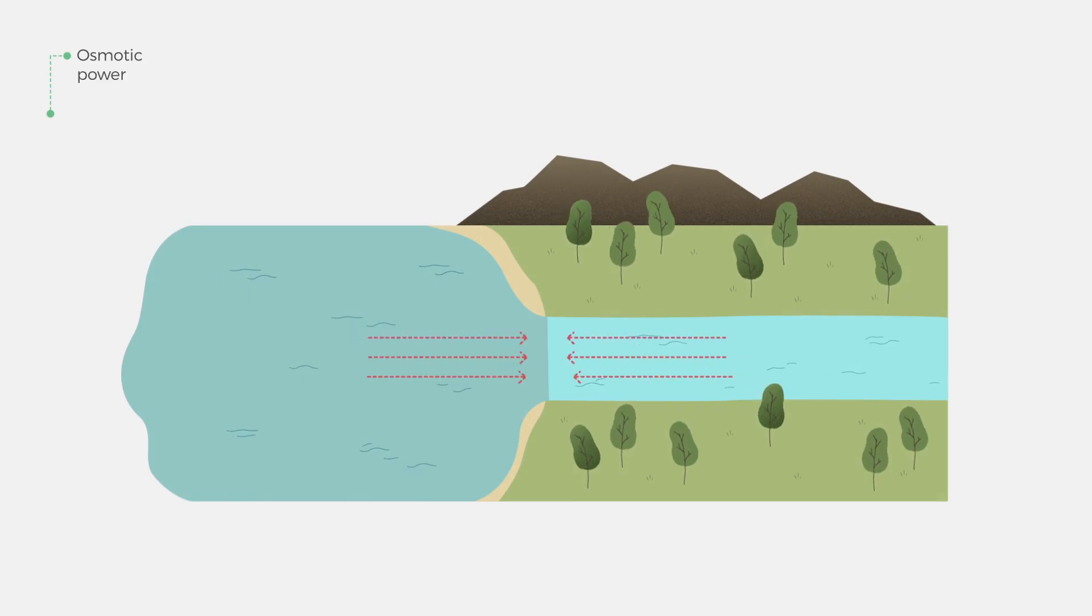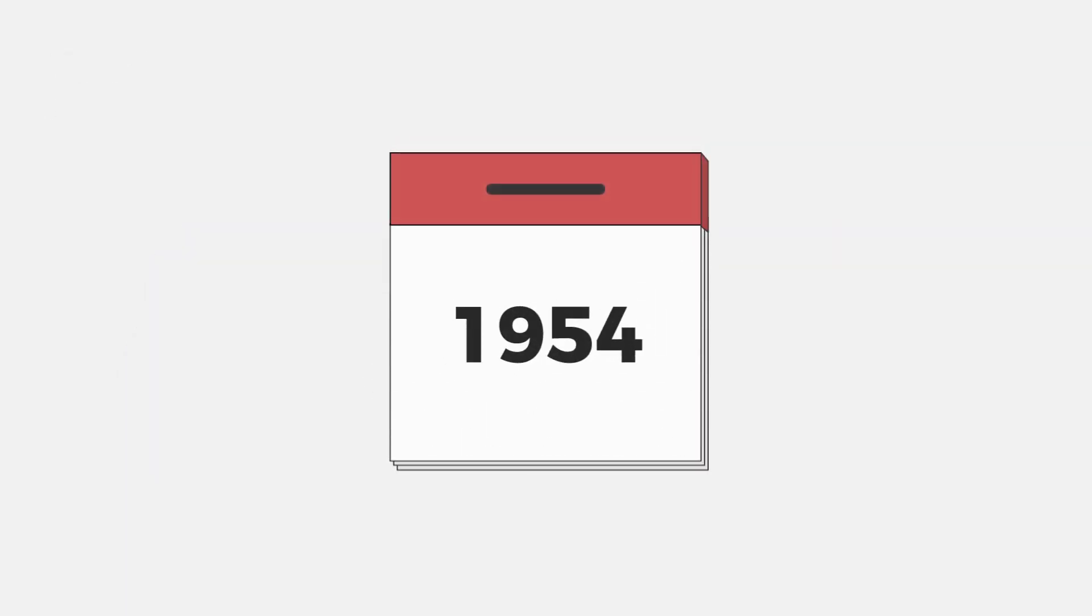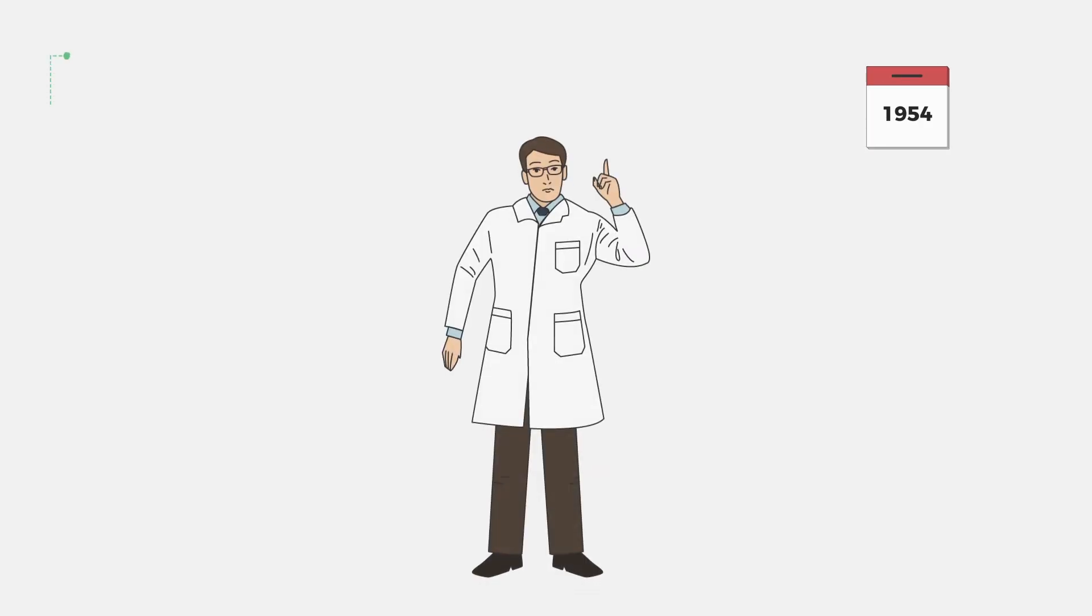When rivers flow into the sea, a kind of chemical shock takes place. Around the 1950s, an American scientist theorized that a change in osmotic pressure could be turned into a source of energy.